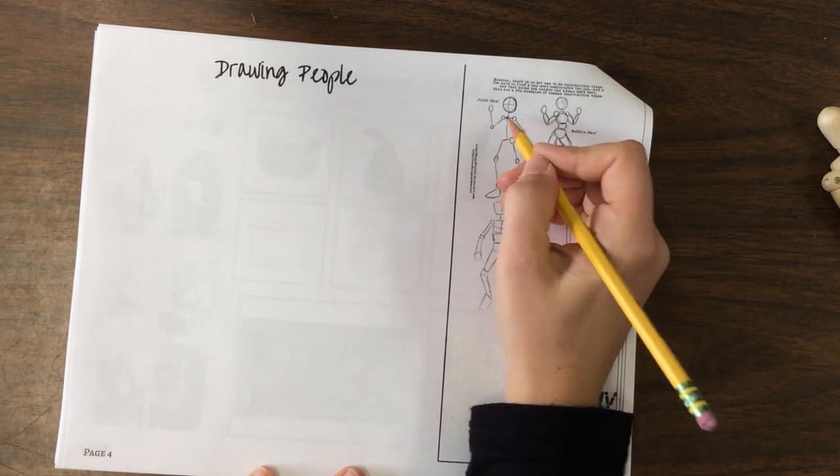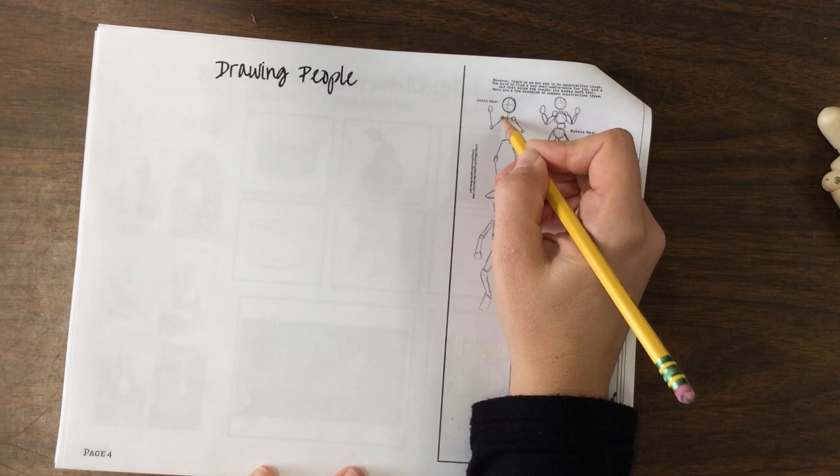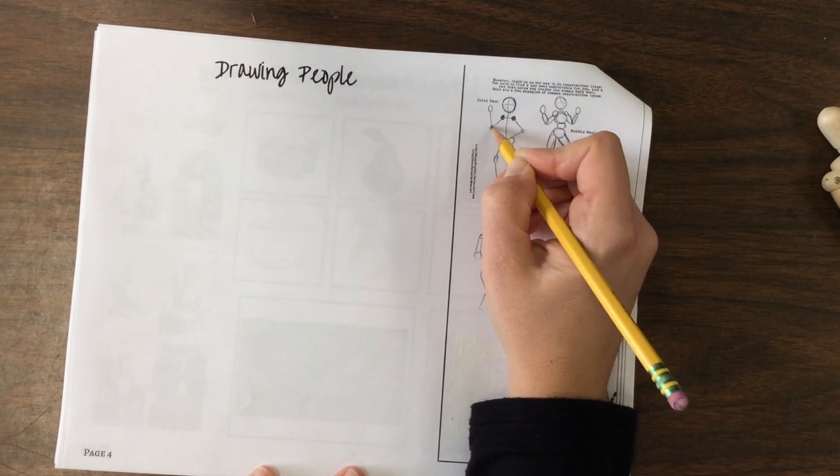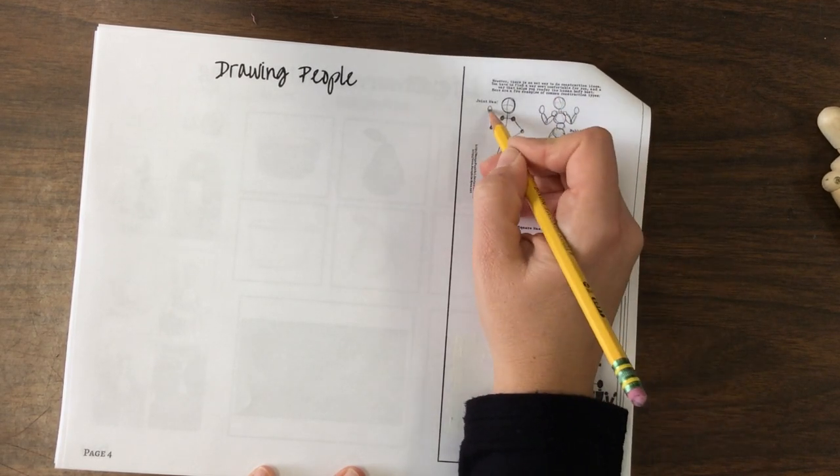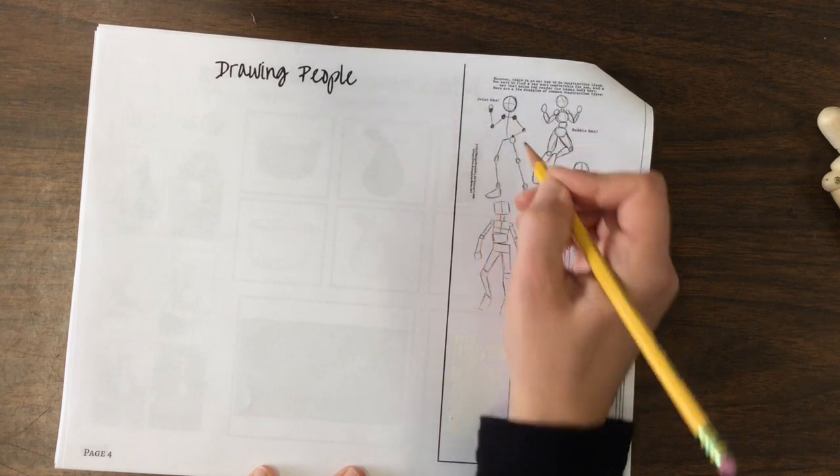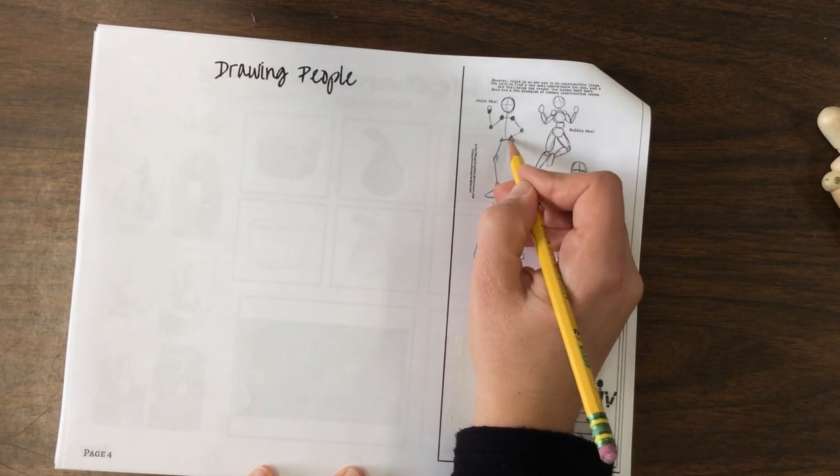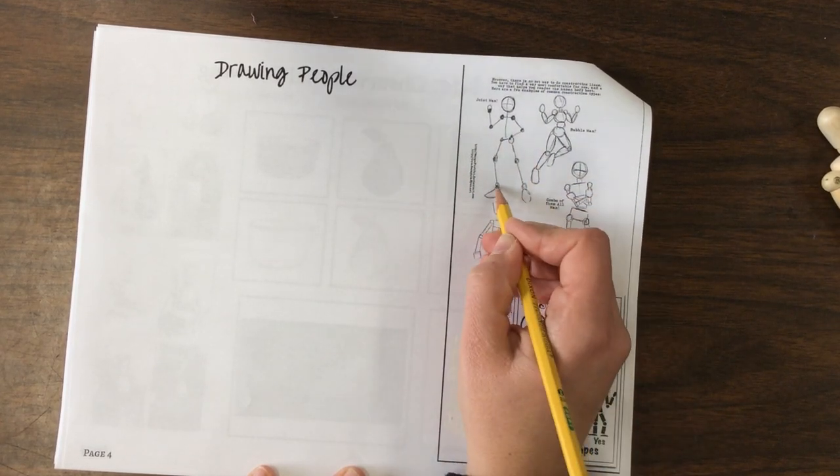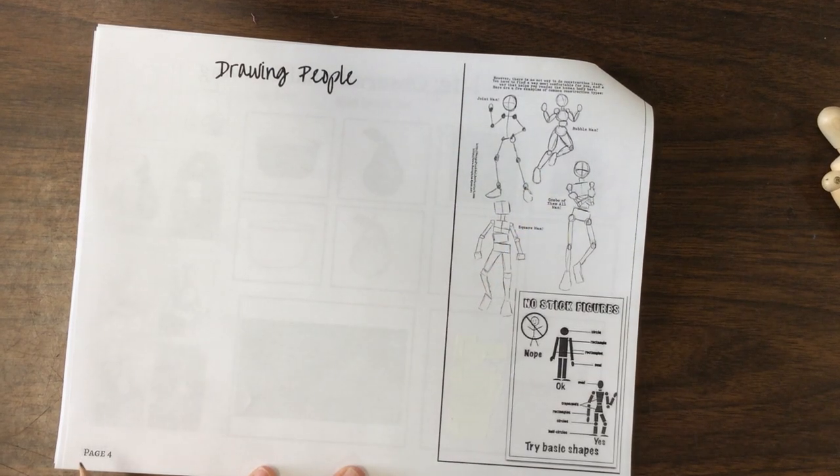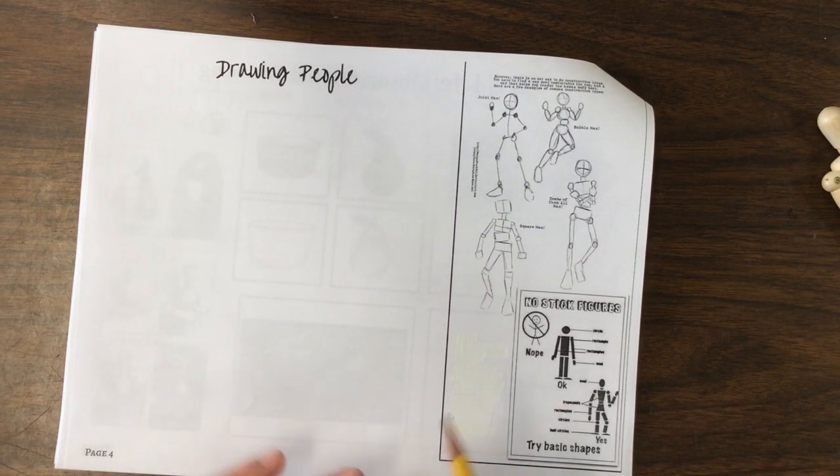Main things that you're going to notice through all of them are the head, the shoulders, elbows, and possibly your wrist, as well as your hips, your knees, and your ankles. Kind of the most important things.